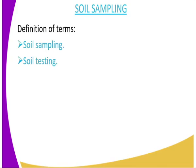Soil sampling — by definition, soil sampling is a process through which soil is taken from the field at different points or stations, and then mixed to act as a representative sample of that particular field. And what is soil testing?